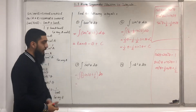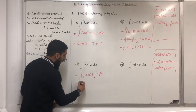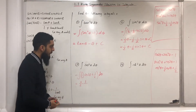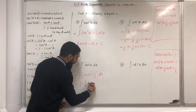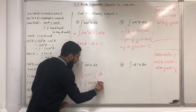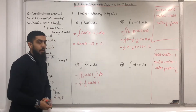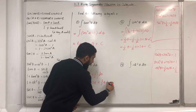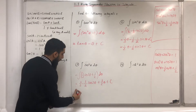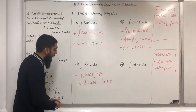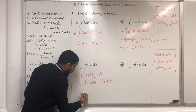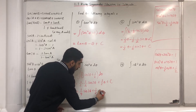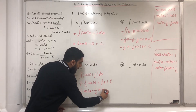I can now integrate the first term: that will be one half multiplied by 1 over the coefficient of theta, which is 2, giving sin 2 theta. The second term, one half, integrates to one half theta, plus c, the constant of integration. I can clean this up and write one quarter sin 2 theta plus one half theta plus c.